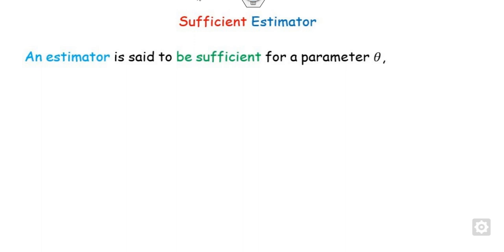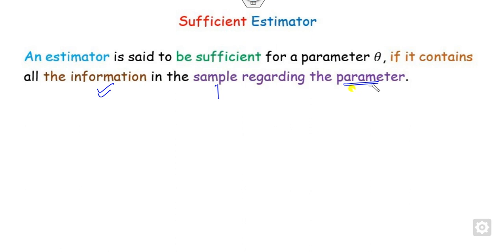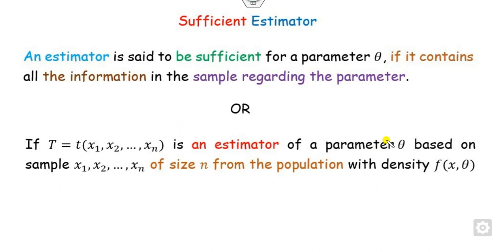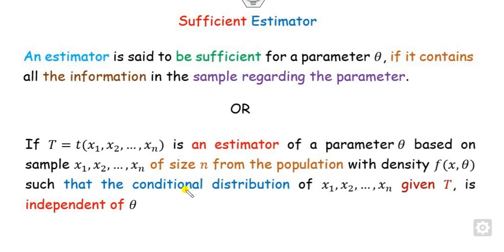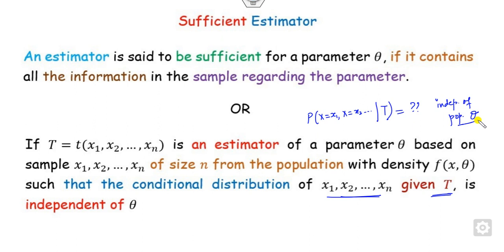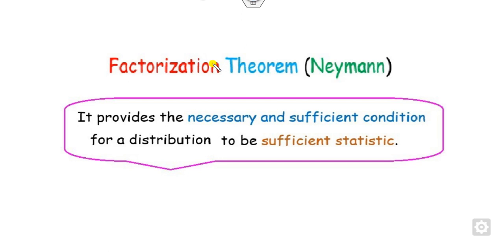Any estimator T is said to be sufficient for the parameter theta if it consists of all the information in the sample regarding the parameter. More formally, if T is the estimator of parameter theta based on a population of size n, such that the conditional distribution of the sample given the statistic is independent of the population parameter theta, then T is called a sufficient estimator.